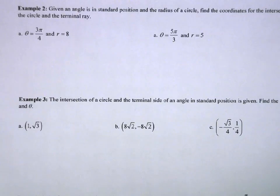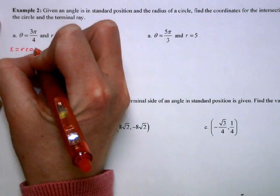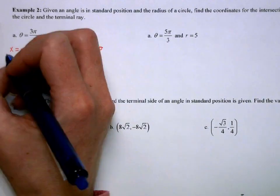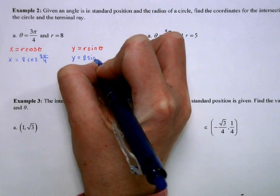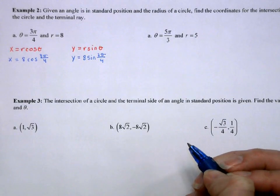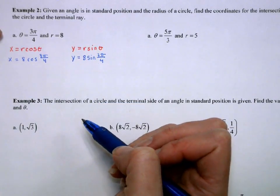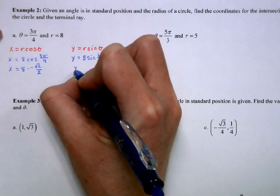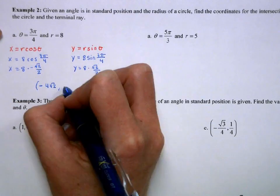Given an angle in standard position and a radius, we find the coordinates at the intersection of the ray and the circle. It's always x = r·cosθ, y = r·sinθ — cosine goes with x, sine goes with y. So for r = 8, θ = 3π/4: x = 8·cos(3π/4) = 8·(−√2/2) = −4√2, and y = 8·sin(3π/4) = 8·(√2/2) = 4√2.